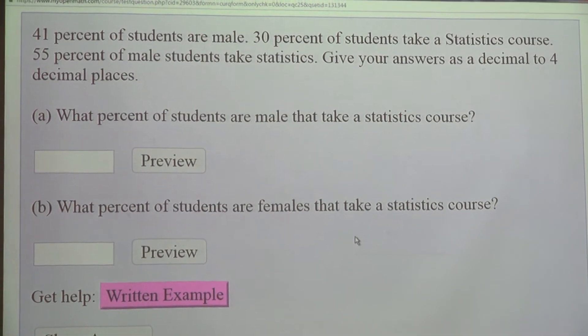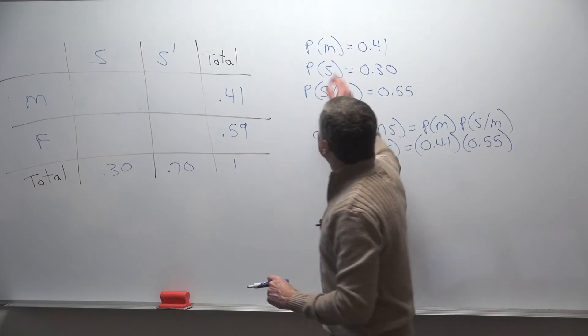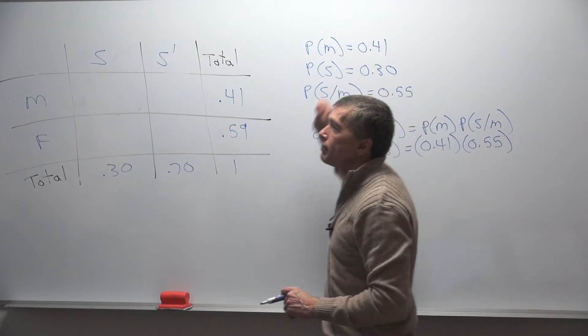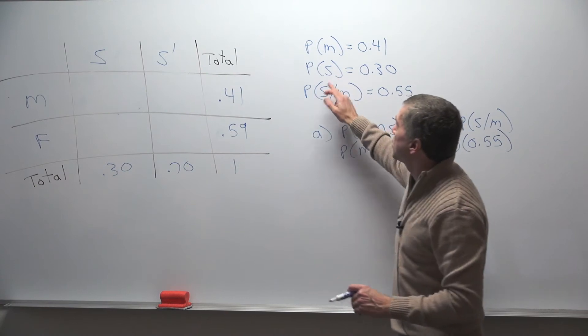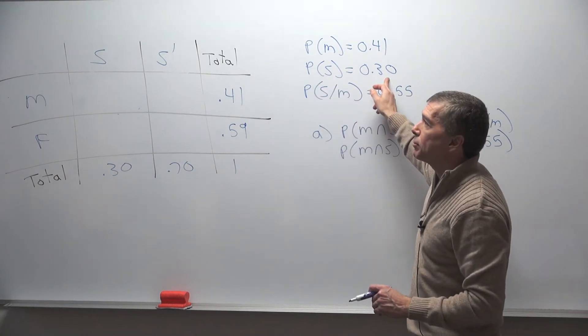On this problem, it says 41% of the students are male, so the probability of male is 41%. It also says 30% of the students take statistics, so I'm using S for statistics, probability of statistics is 30%.